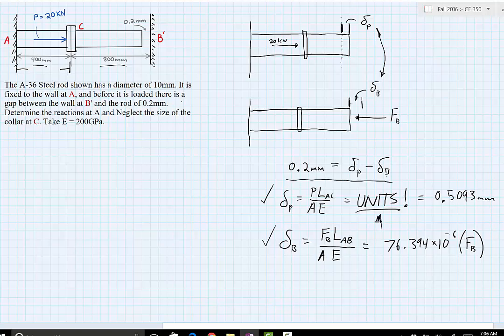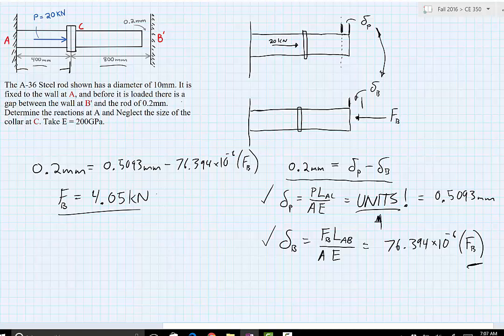So 0.2 millimeters equals 0.5093 millimeters minus 76.394 times 10 to the negative 6 F sub B. So solving this, you should get the force F sub B then equals, I'll just go ahead and do the conversion, 4.05 kilonewtons. We want to keep it in kilonewtons, a unit of force, what our original unit was in.